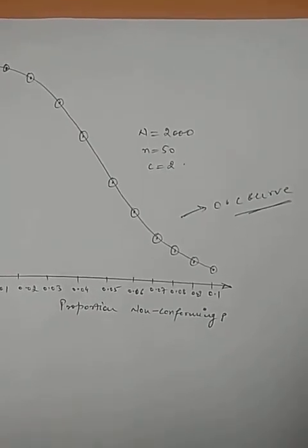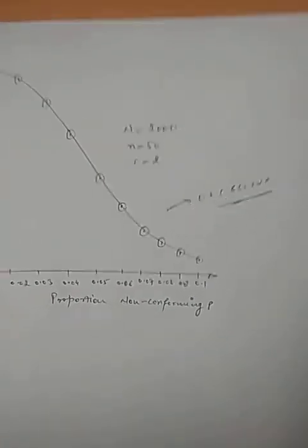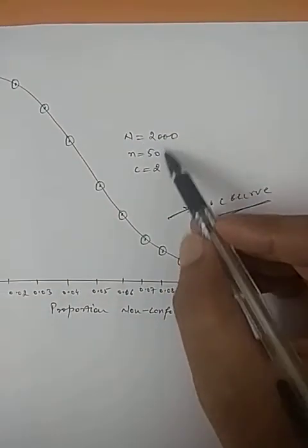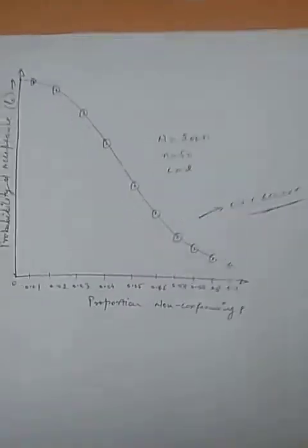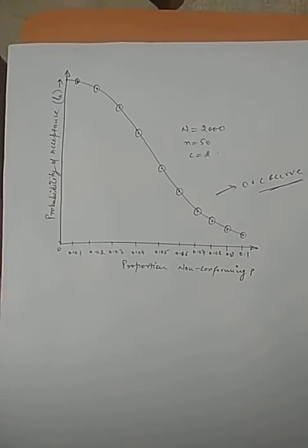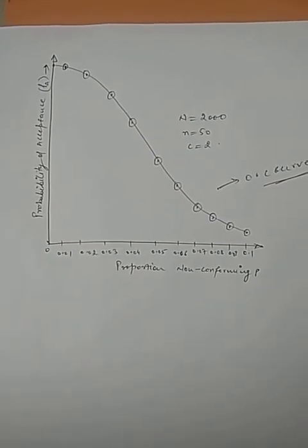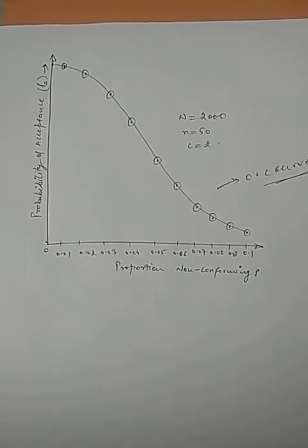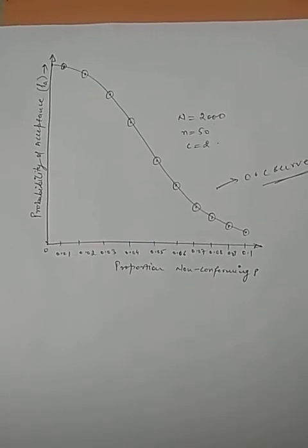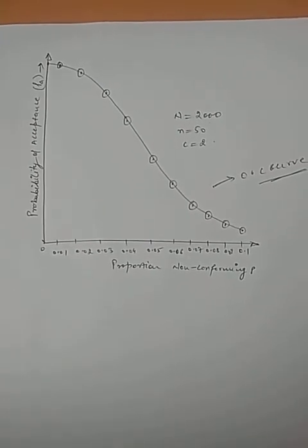If n value is 10 or 20, then we generally use binomial. In the next class, we will continue with this. We have to write the data given here from previous year questions. Thank you students. I will show you how this numerical is going to be solved within a few minutes. Thank you.